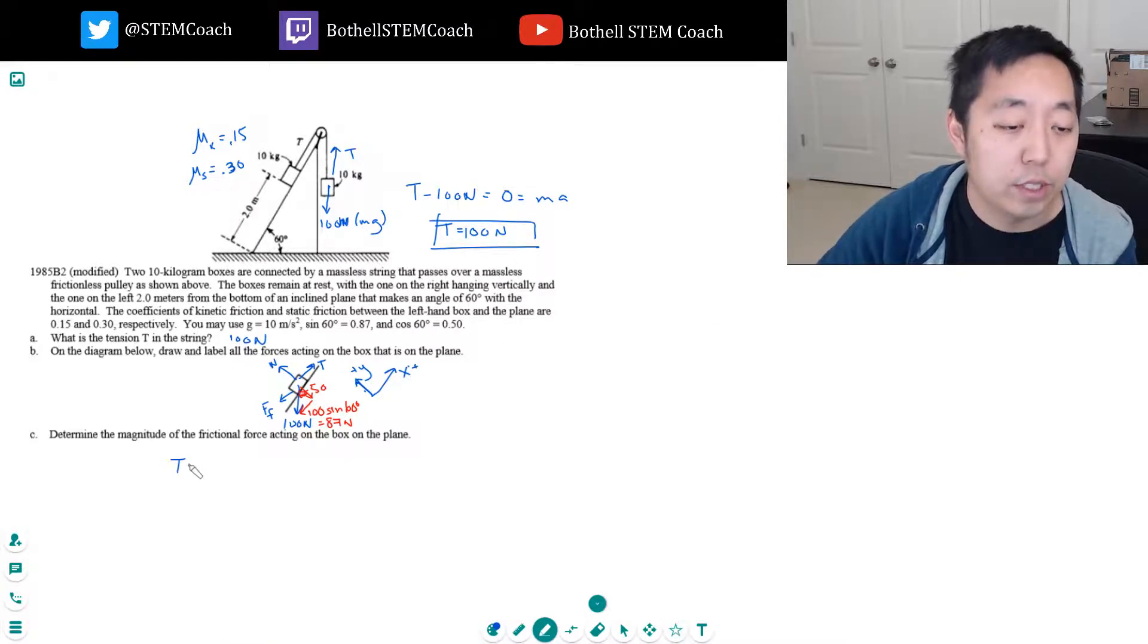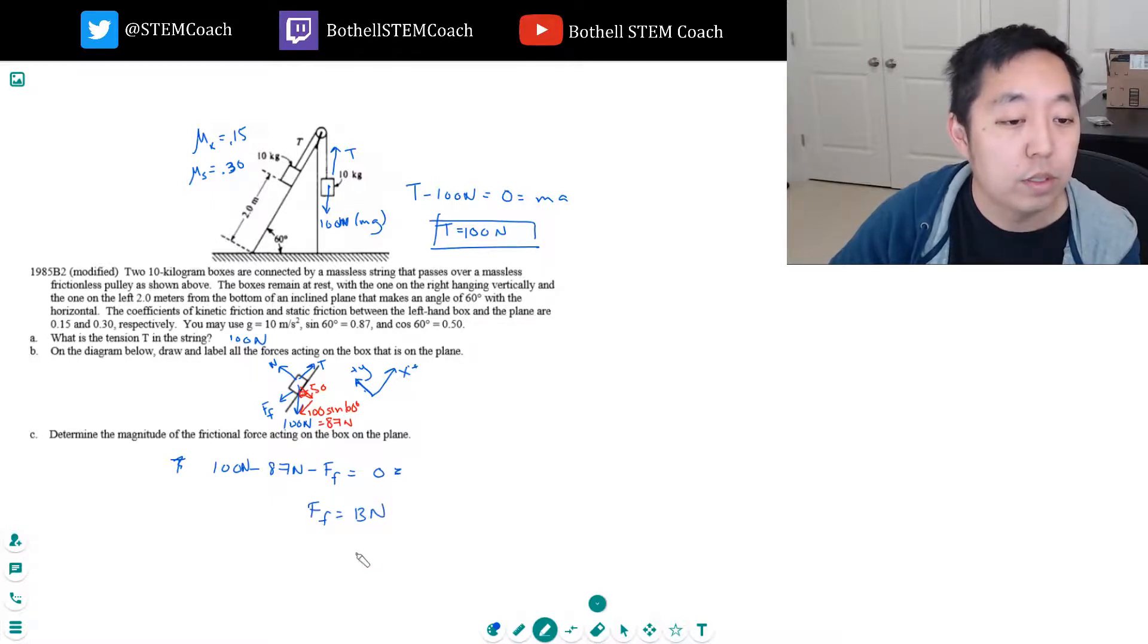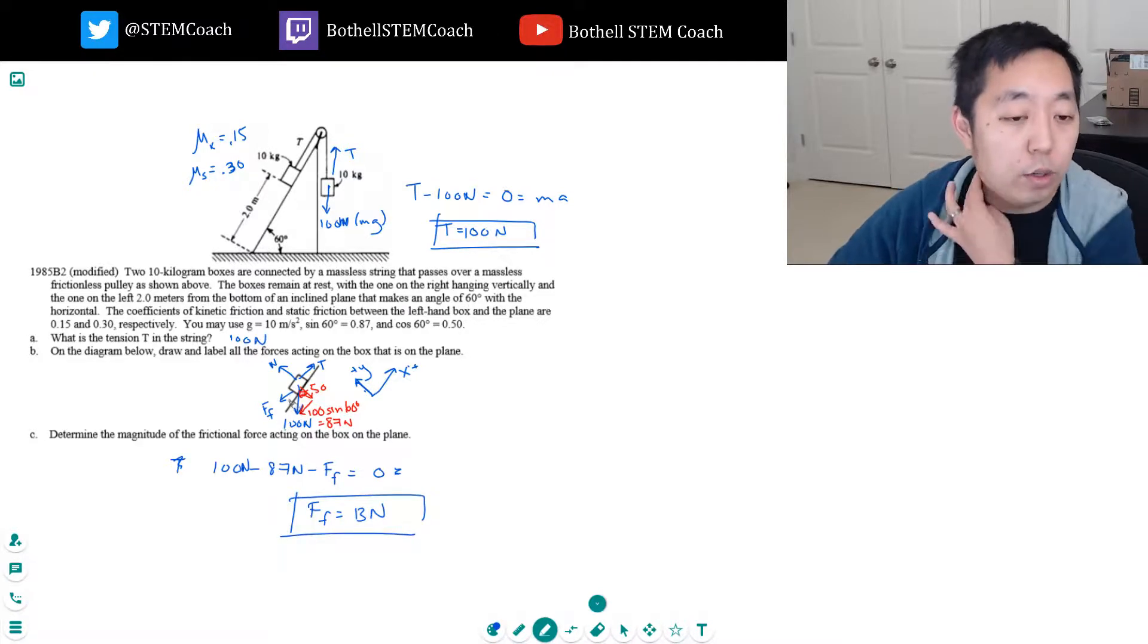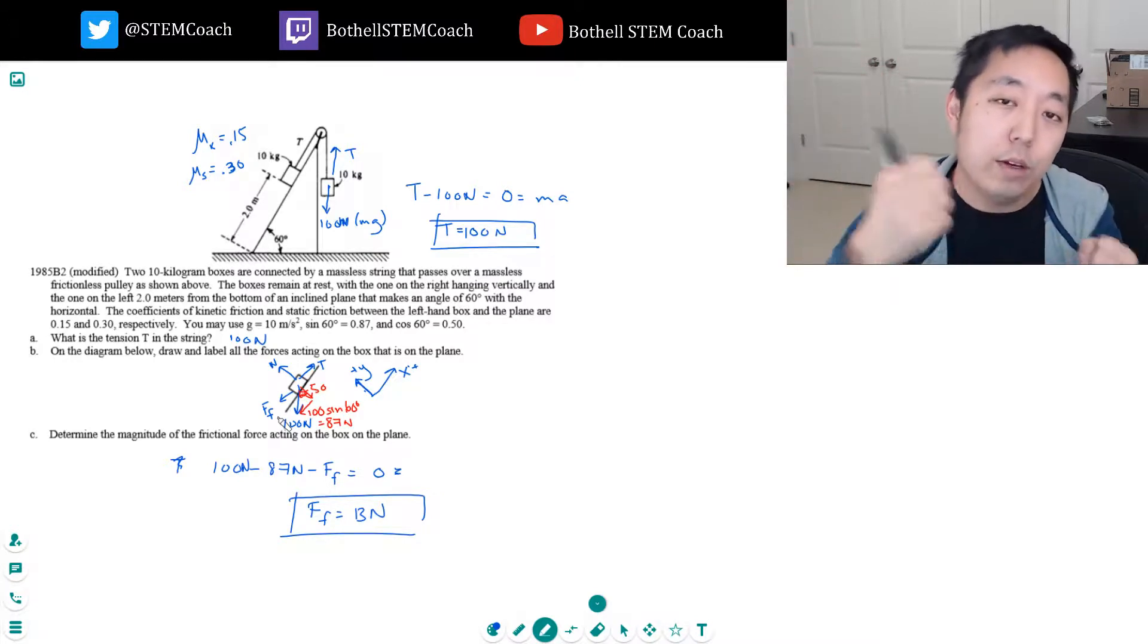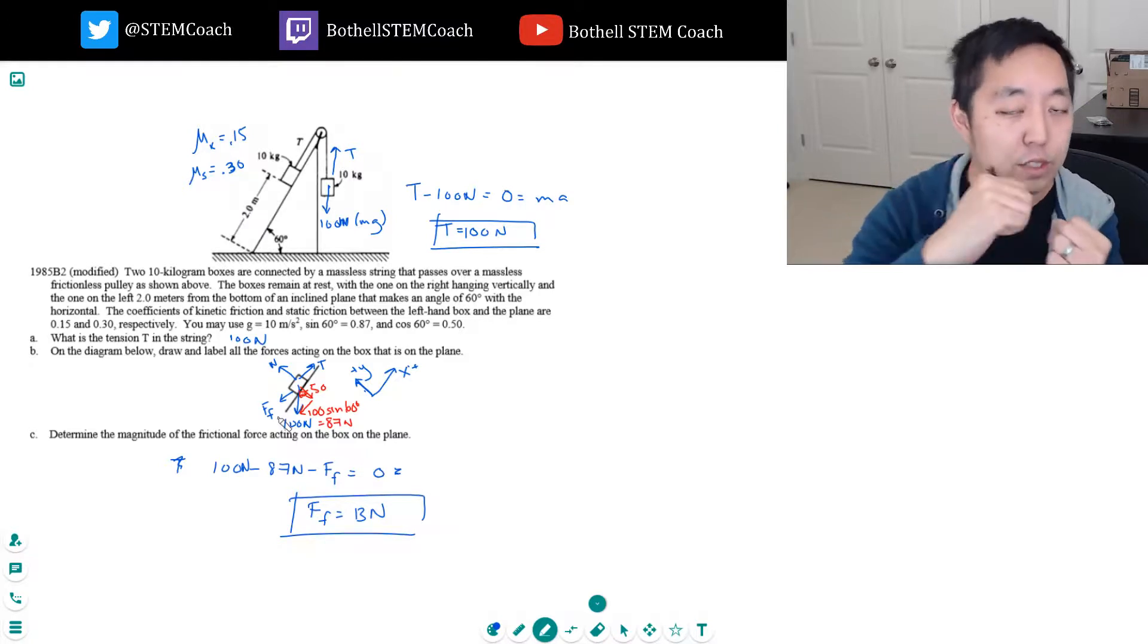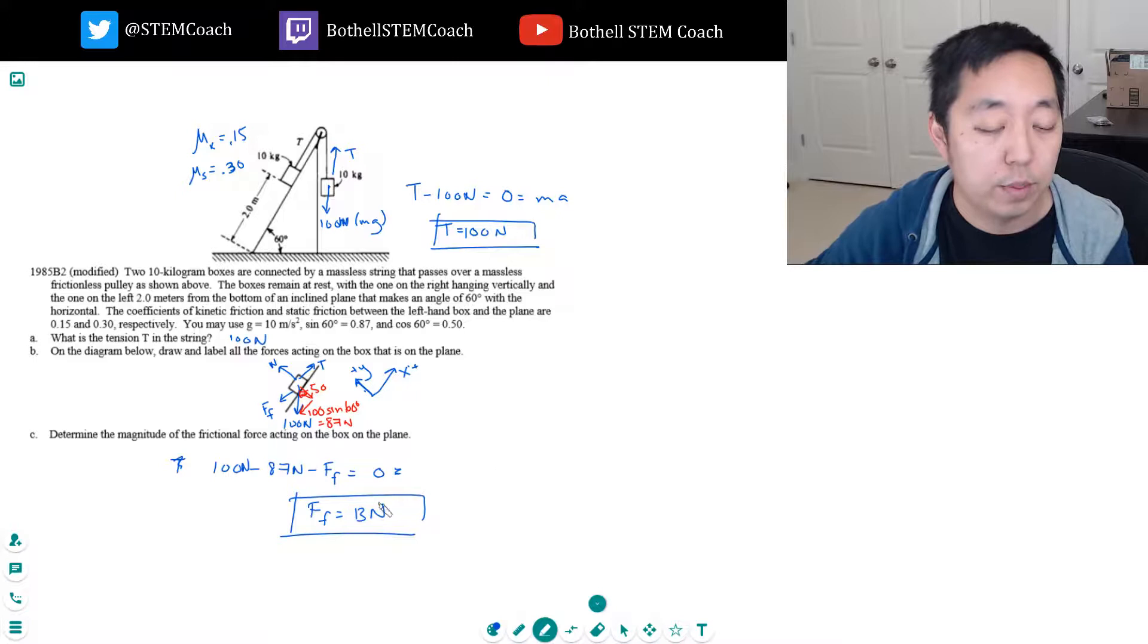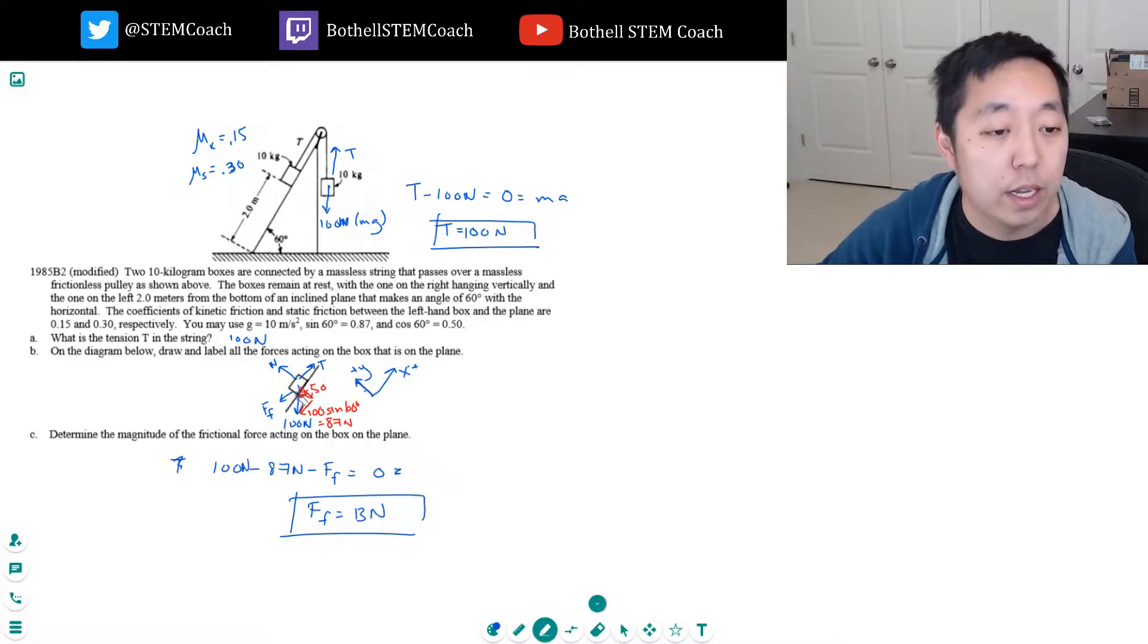So as you can see, I have tension which is equal to 100 newtons, 100 this way, then fighting me is 87 newtons this way and the force of friction. That has to be zero, so that implies force of friction has to be 13 newtons. Here's the thing: gravity is doing 87 newtons down, tension is 100 newtons up, which means without any friction the box would start sliding up. So the friction is fighting that and doing 13 newtons to counteract that, and it's matching that because the box is at rest.